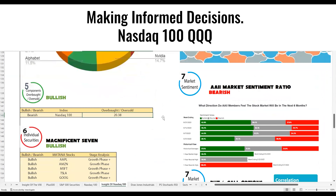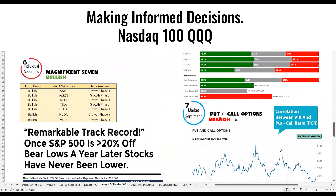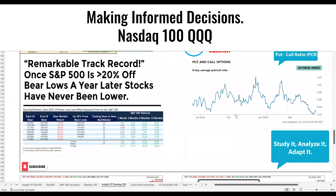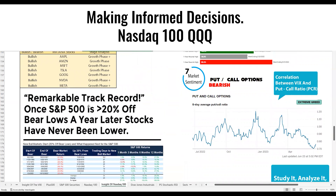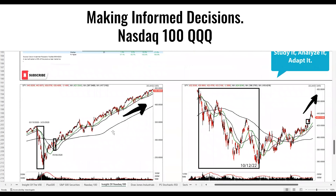Again, weight of evidence. AAII market sentiment ratio: not very good. Everyone is in euphoria. Put-call ratio: not very good. What is very good is something that has a remarkable track record — once the S&P 500 goes up 20% off bear market lows, we spoke about this in other videos. You can see it goes down to the lows and then off to the races. We've hit the 20% off the lows, and we're expecting the number to move up higher.